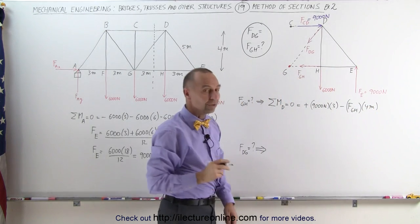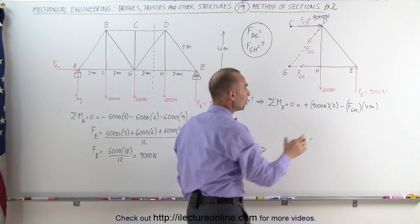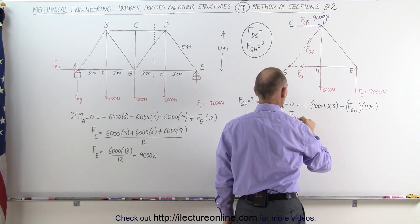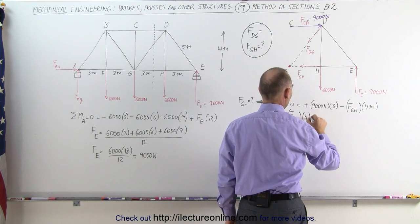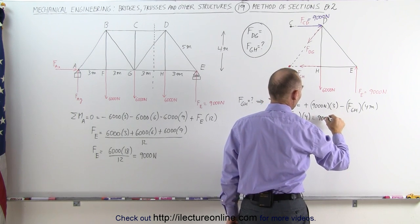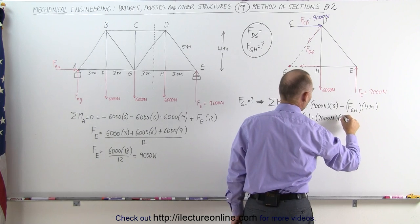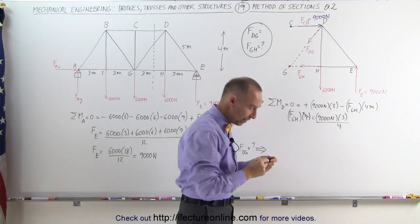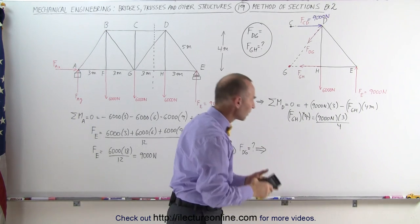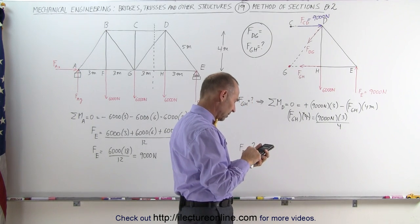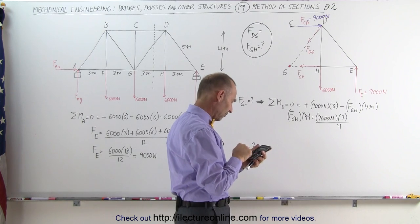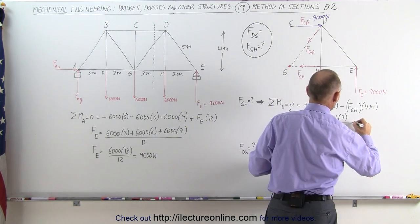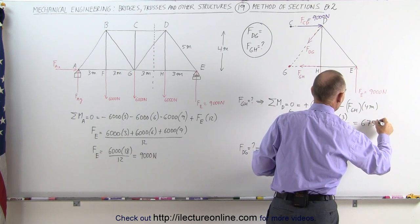This allows us to find the force between G and H. When we move this to the other side, it becomes positive. We have force GH times 4 equals 9,000 Newtons times 3. We now divide both sides by 4, and so it becomes 3 quarters of 9,000 Newtons. 9,000 times 3 divided by 4, and that would be 6,750 Newtons.